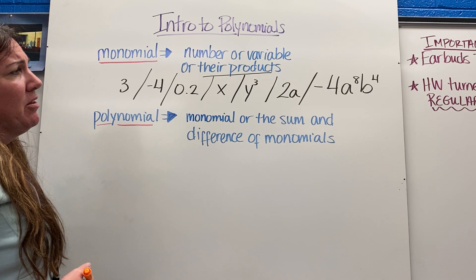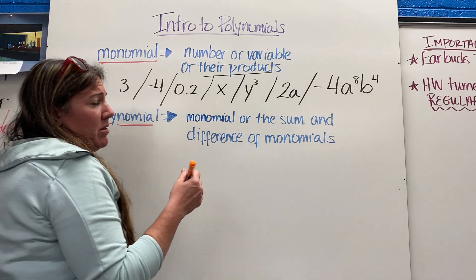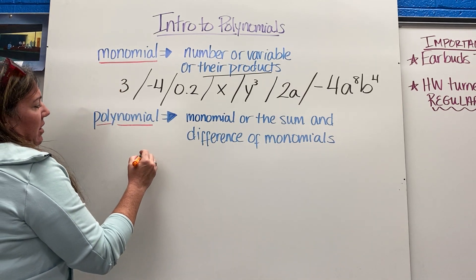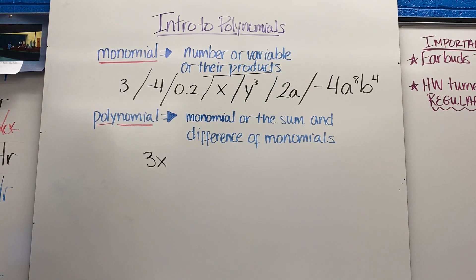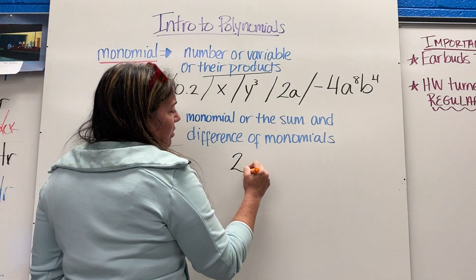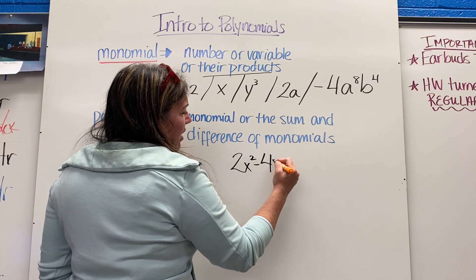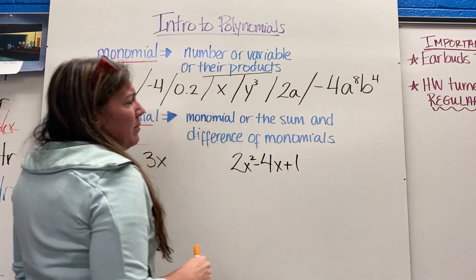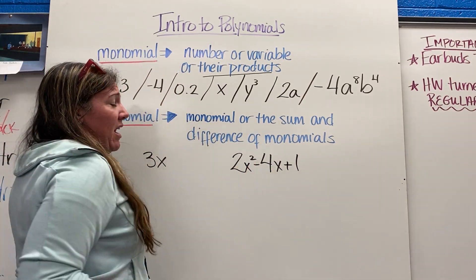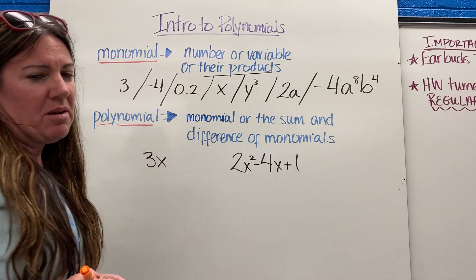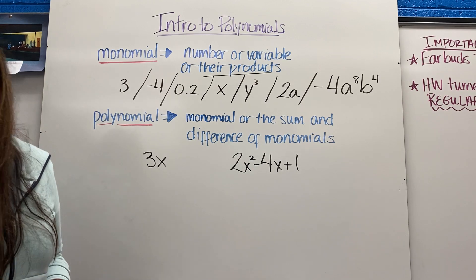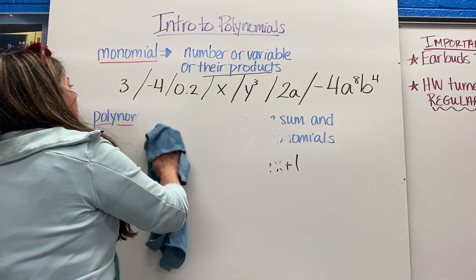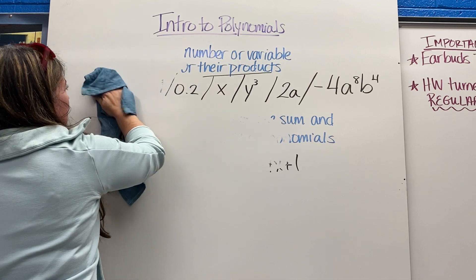A polynomial can be a monomial — just one term, like 3x — and technically that's a polynomial. Or it's a sum or difference of monomials, like 2x squared minus 4x plus 1. Those are a bunch of monomials being added or subtracted. We need to understand what we mean when we say polynomial.